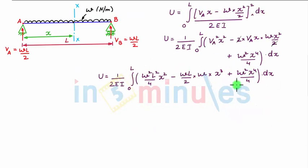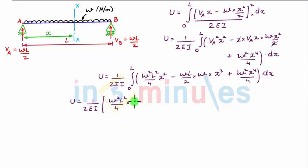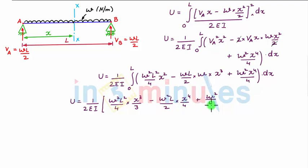Upon integrating, strain energy U = (1/2EI) · [W²L²/4 · x³/3 − W²L/2 · x⁴/4 + W²/4 · x⁵/5] with limits from 0 to L.